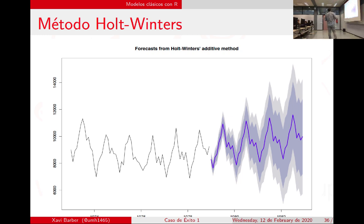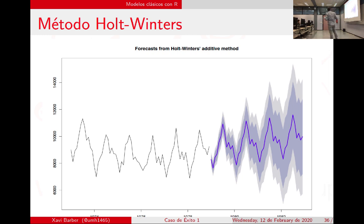Si miramos los accidentes de tráfico en España, hay tres picos: Semana Santa, julio-agosto y Navidad. Si dibujara mi serie temporal tendría esos tres picos. En Estados Unidos tienen Acción de Gracias y Navidad. Con Holt-Winters podría funcionar bien para este tipo de patrones estacionales.